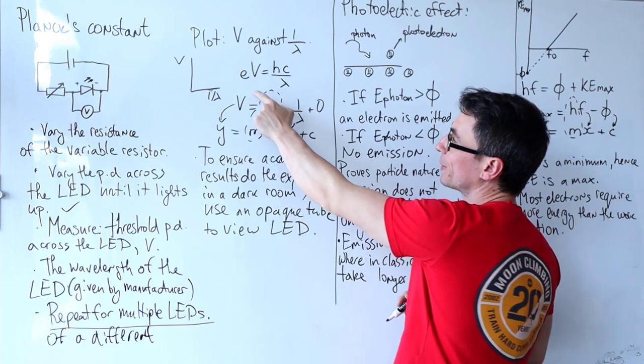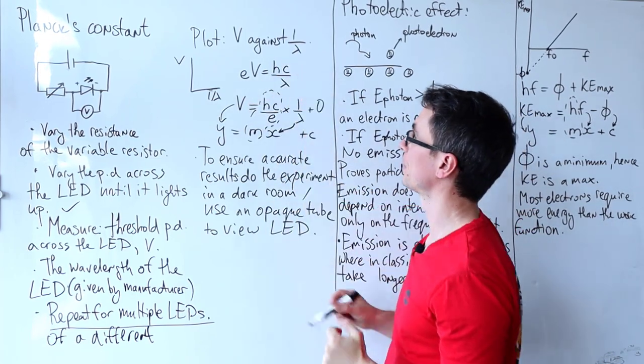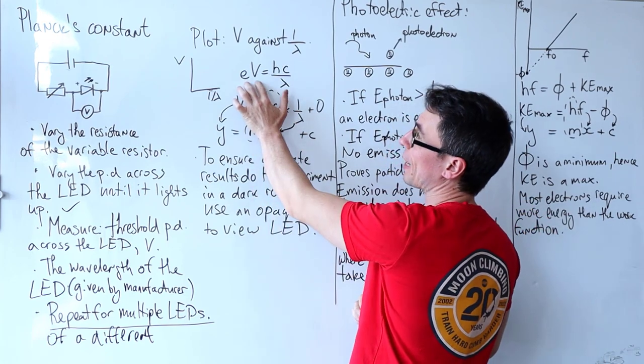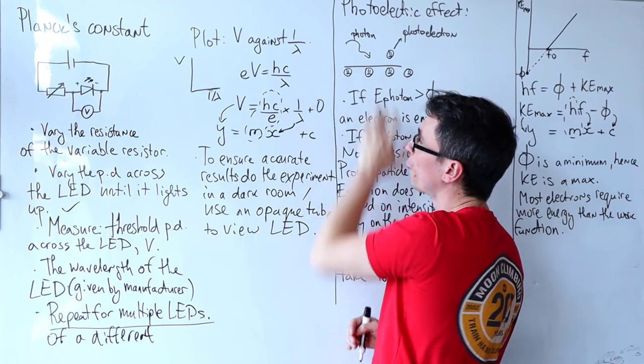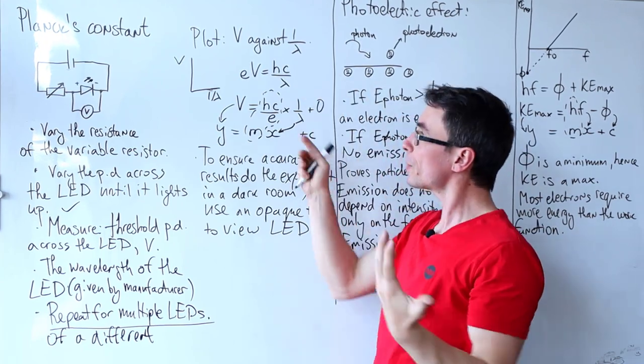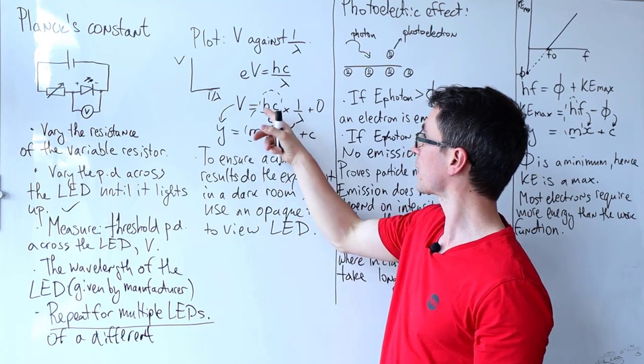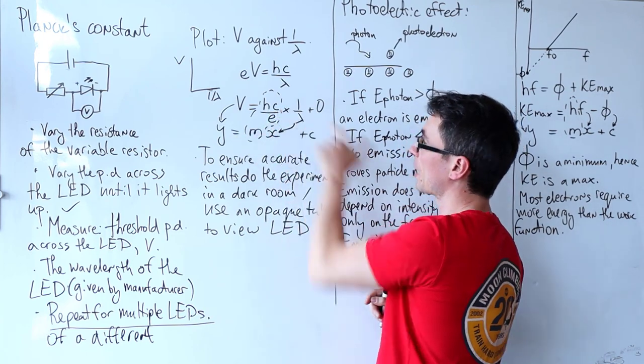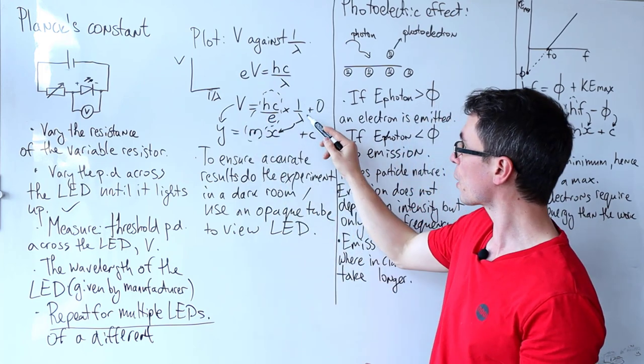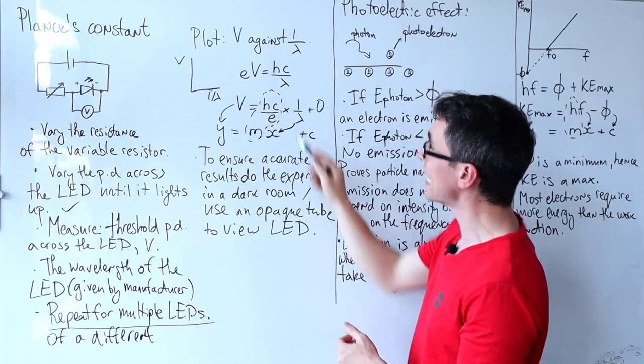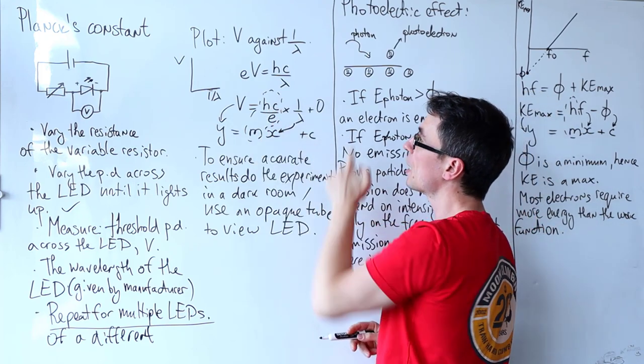Why one over lambda? Well, this is our equation: eV equals hc over lambda. On the left-hand side we have electrical energy that is being directly converted to photon energy. Rearranging for whatever is on the y-axis, we get that V is hc over e times one over lambda. If V is on the y-axis and one over lambda is on the x-axis, this means that our gradient is going to be hc over e.